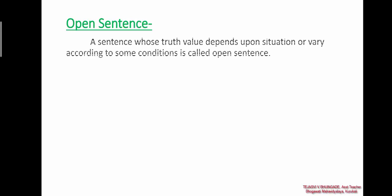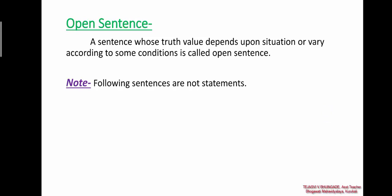Now we see open sentence. There are many types of sentences. An open sentence is one whose truth value is not fixed — it varies according to some conditions. Definition: A sentence whose truth value depends upon a situation or varies according to some conditions is called an open sentence. For example, 'He is a musician' — the truth value changes depending on who 'he' refers to.